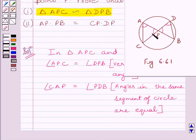Now by AA criterion of similarity, we get triangle APC is similar to triangle DPB. AA similarity states that if two angles of one triangle are respectively equal to two angles of other triangle, then the two triangles are similar.